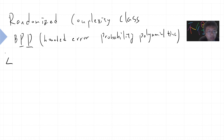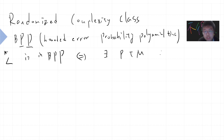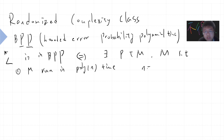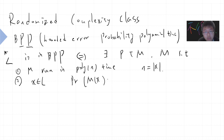Let me write down the precise definition. There are two definitions. The first one: L is in BPP if and only if there is a probabilistic Turing machine M such that M runs in polynomial time, and if x belongs to L, then the probability that M of x outputs one is greater or equal to two-thirds.